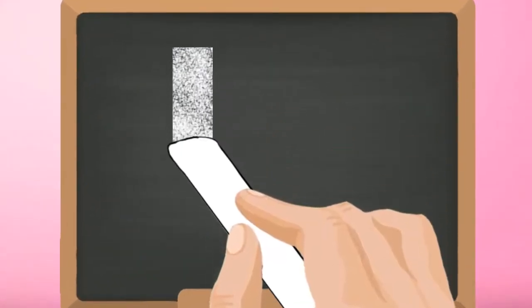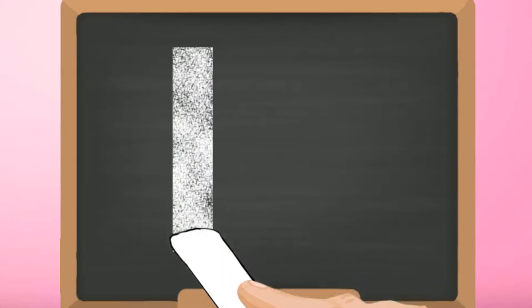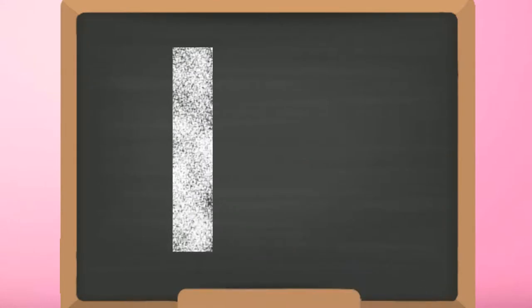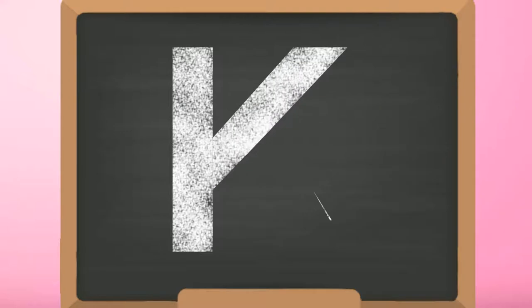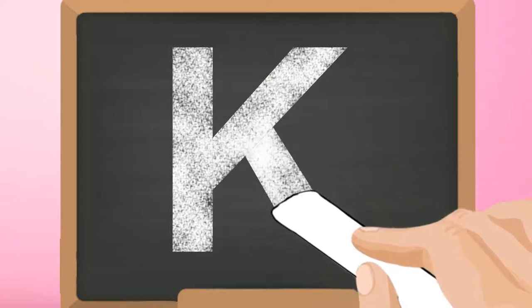Start from the top and draw a standing line down. Go back to the top and make a downward slanting line to the left. Then make a downward slanting line to the right till the bottom.